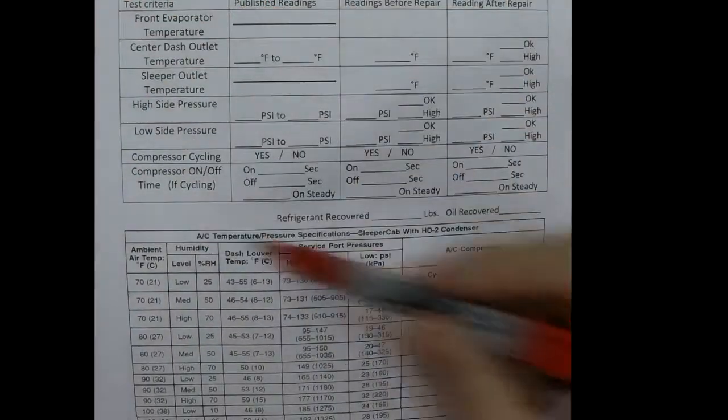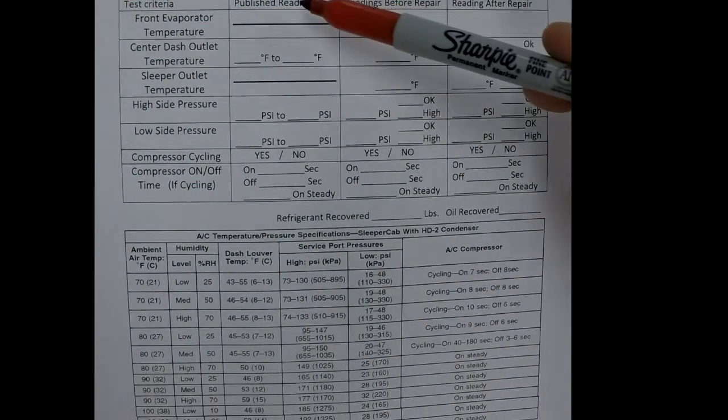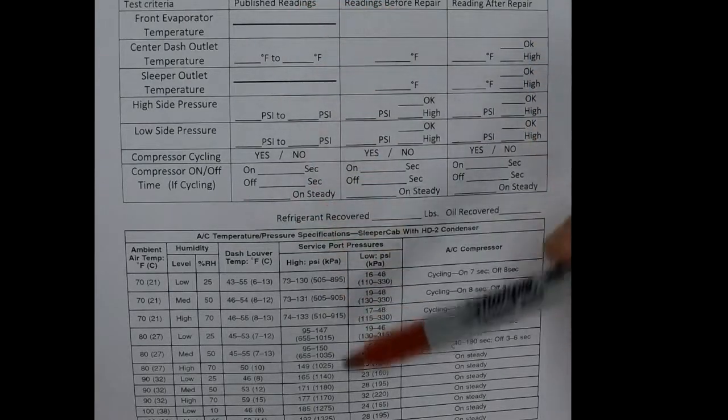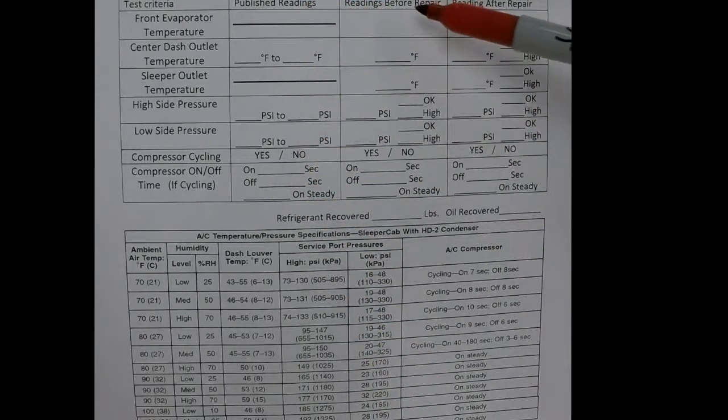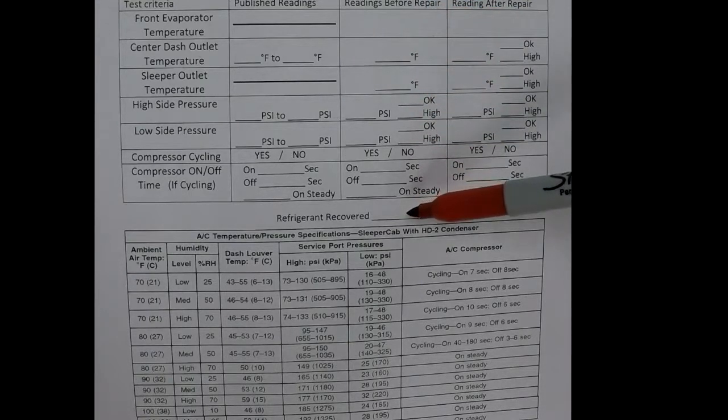All right. The next little chart here has three columns. Published readings. This is what we're going to fill out from below here. This is what Freightliner says it should do today. Readings before the repair. This is what we're going to get off the first test. That tells us if there is a problem or not.